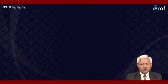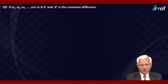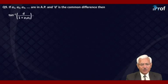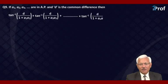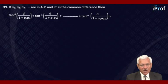If A1, A2, A3, ... are in AP and D is the common difference, then tangent inverse D upon 1 plus A1·A2, plus tangent inverse D upon 1 plus A2·A3, plus so on, tangent inverse D upon 1 plus An·An+1 is equal to — the options are: